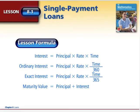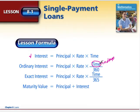Let's look at our formulas. You'll recall from previous lessons that we calculated simple interest by finding the principal, multiplying it by the rate, and multiplying it by the time. For ordinary interest, make sure time is in days and divide those days by 360. For exact interest, divide that time by 365. Then we'll calculate the maturity value — what you actually pay back — which is the principal plus the interest that has accrued over that time period.